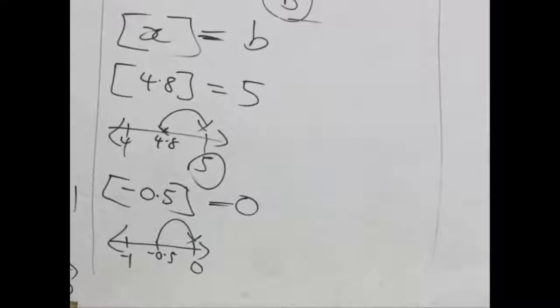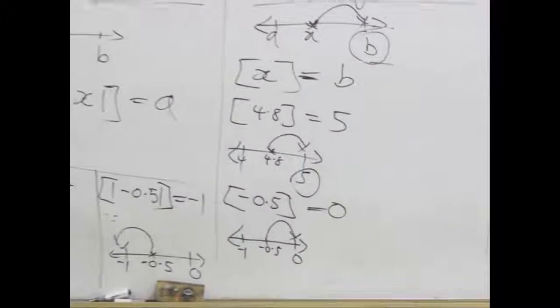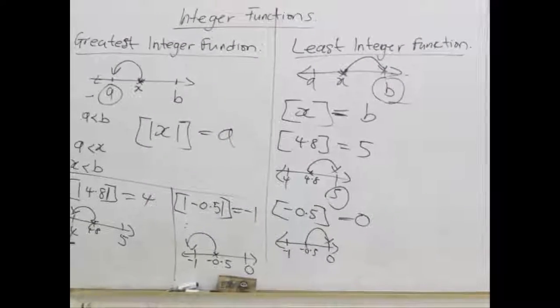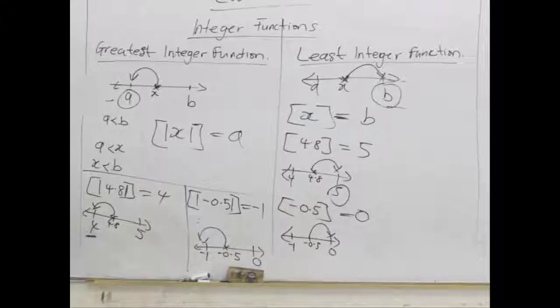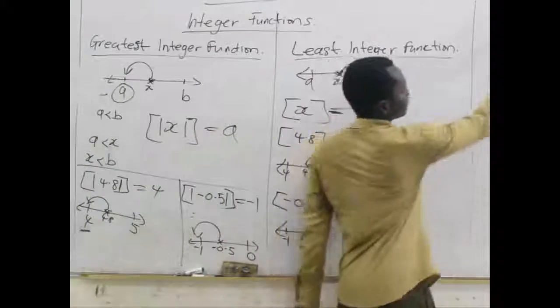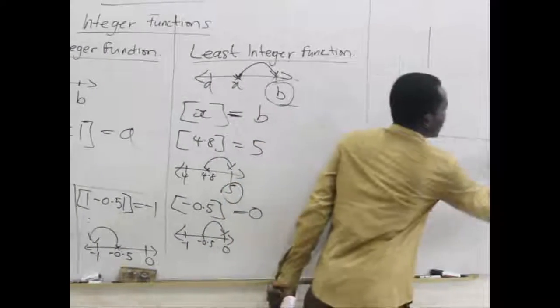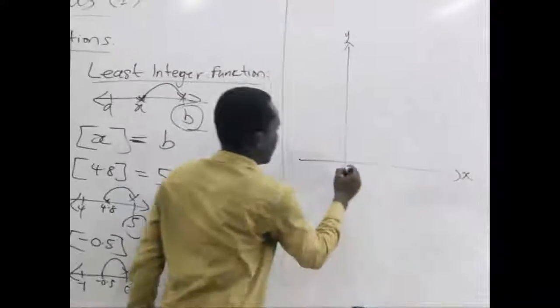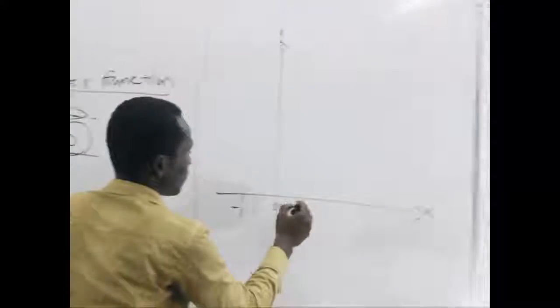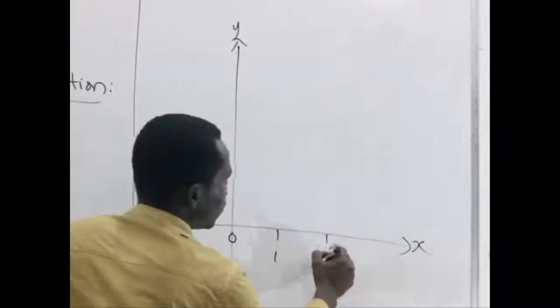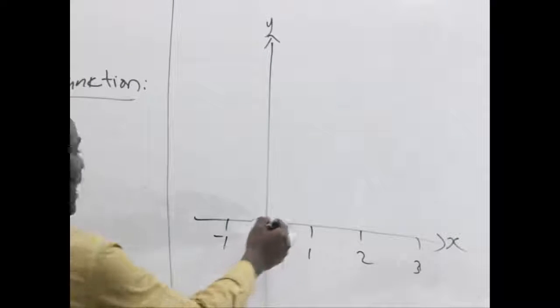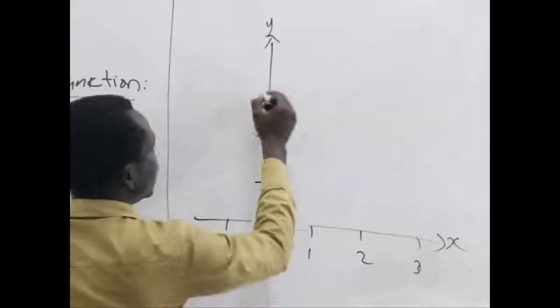Now, let's try to find the graph. How the graph looks like for least integer function. It's just the opposite of this one. Assuming we have our number line. Y axis, X axis. We have our 0, minus 1, 1, 2, 3. We know when we stand at 0, 0 is a whole number.